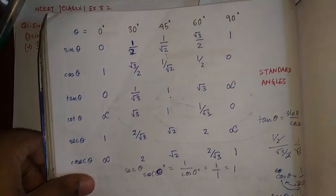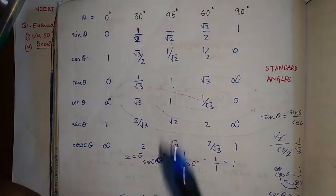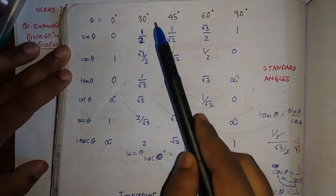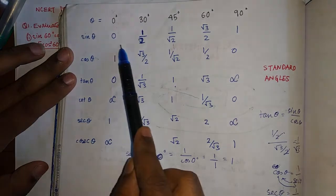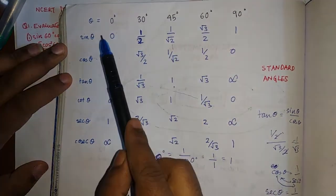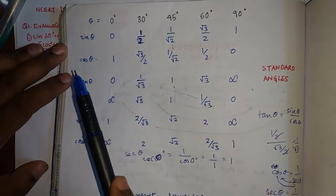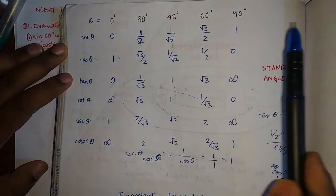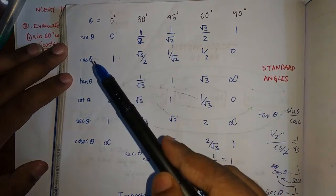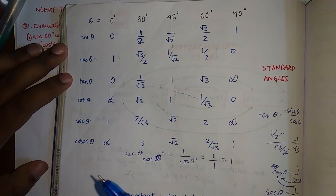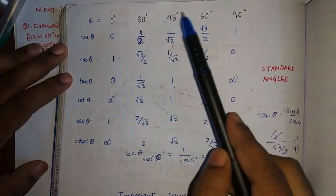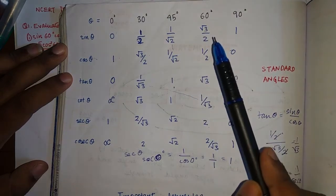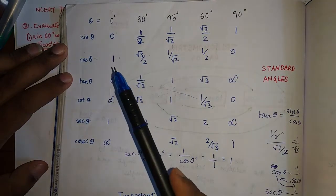Let's revise what we learned earlier about the values of the standard angles: 0°, 30°, 45°, 60°, and 90°. You just need to remember the sine values. Sine 0° = 0, sine 30° = 1/2, sine 45° = 1/√2, sine 60° = √3/2, and sine 90° = 1. I'll show you how to find the values of other trigonometric ratios from these.